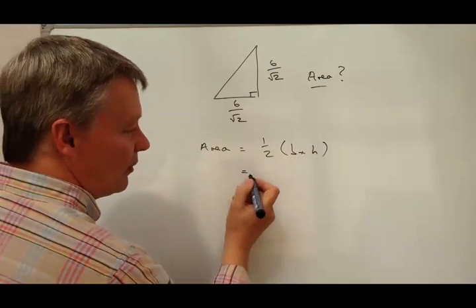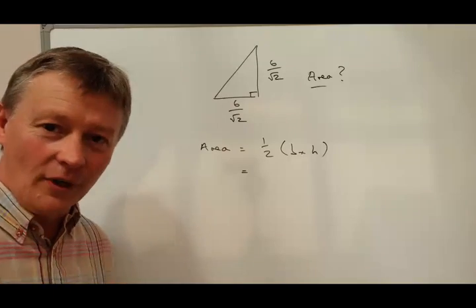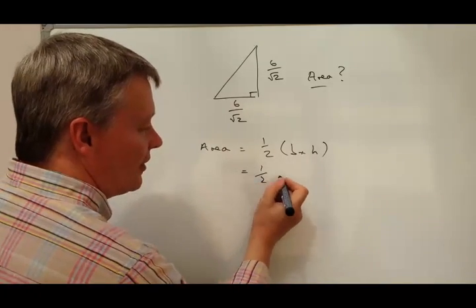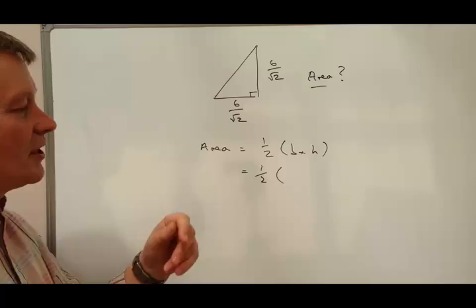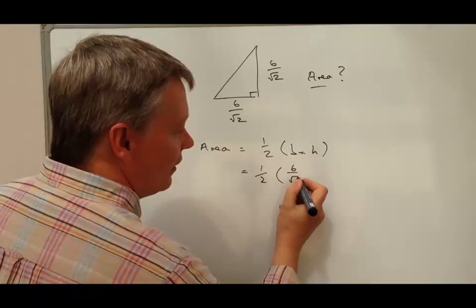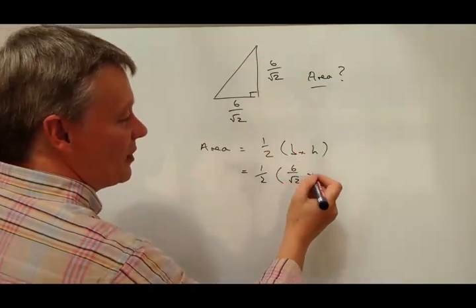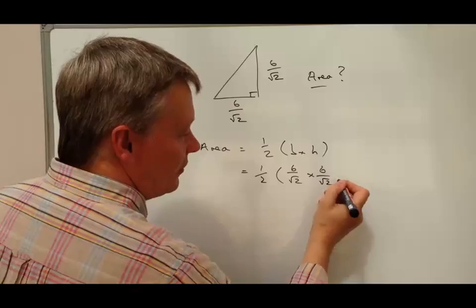Okay, well let's just plug the numbers into that and see what happens. So we've got a half, I'm going to leave that as a half, and I've got base which is 6 root 2, multiplied by height which is 6 root 2.